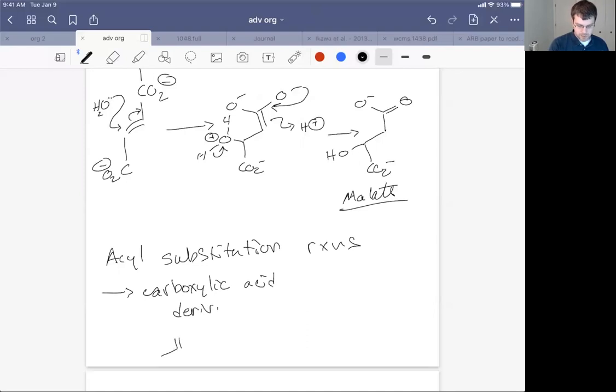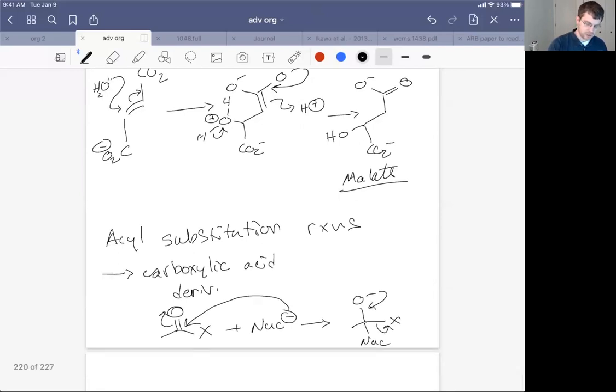And I'll just draw it with some sort of generic X leaving group. We add a nucleophile and it's going to push the electrons on the carbonyl up to form a tetrahedral intermediate, which then collapses to kick out the X group or the leaving group and that makes a new carboxylic acid derivative.